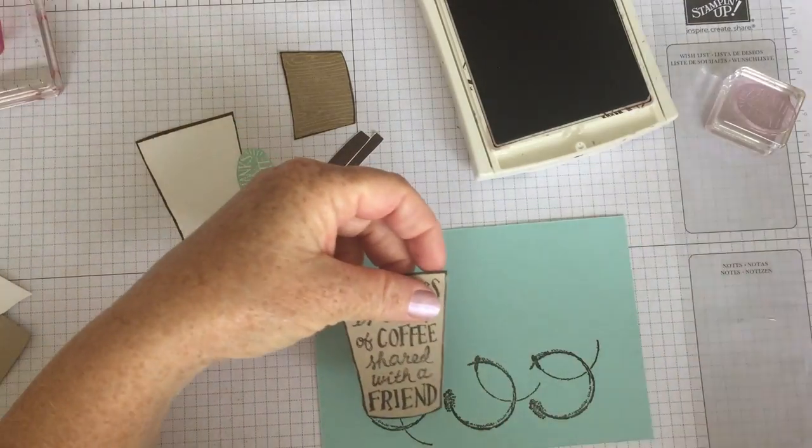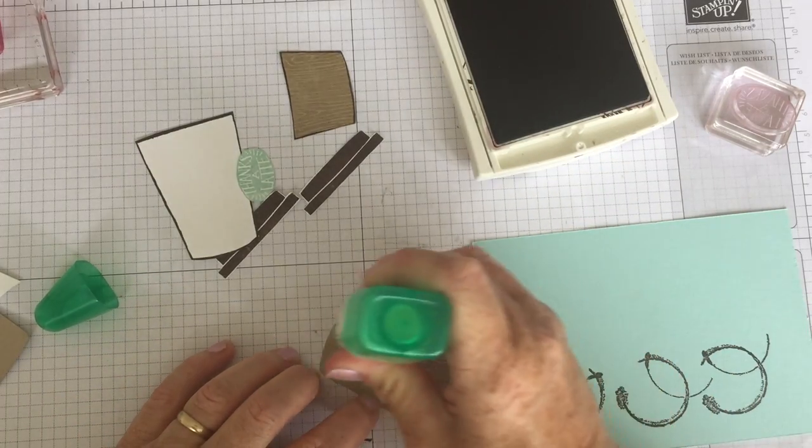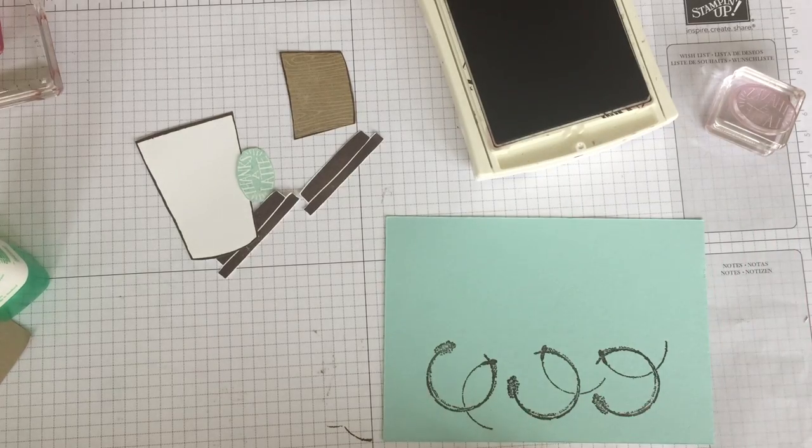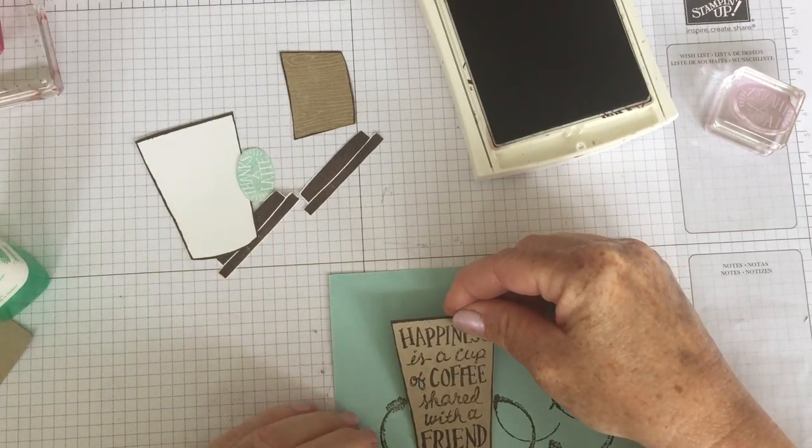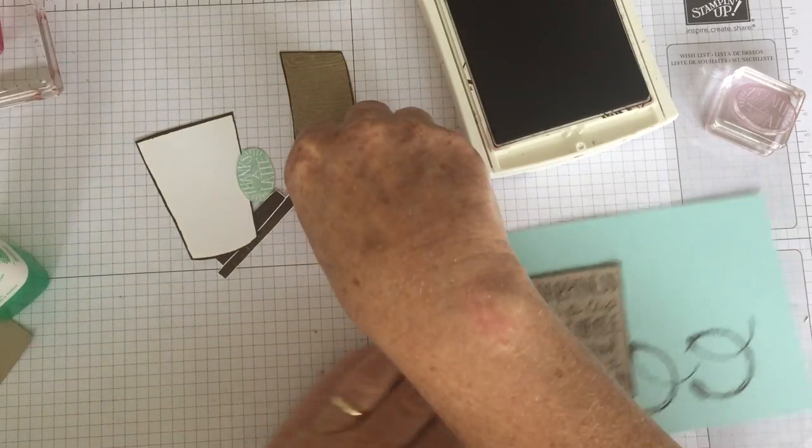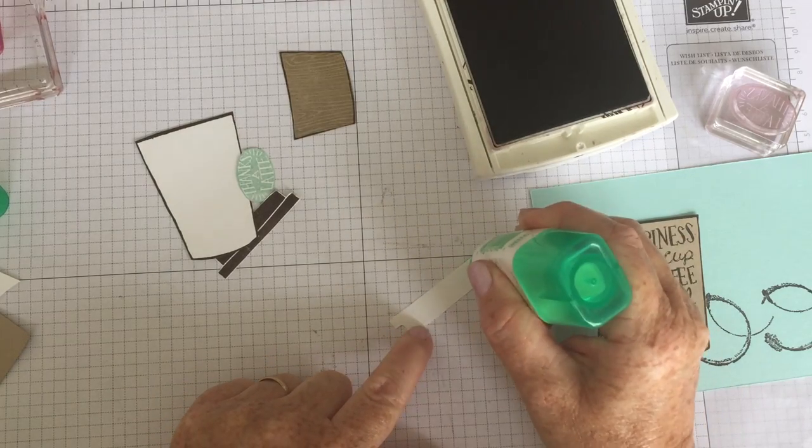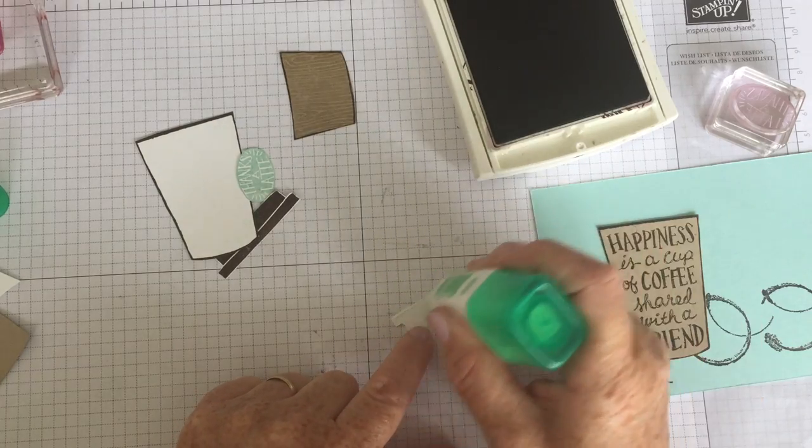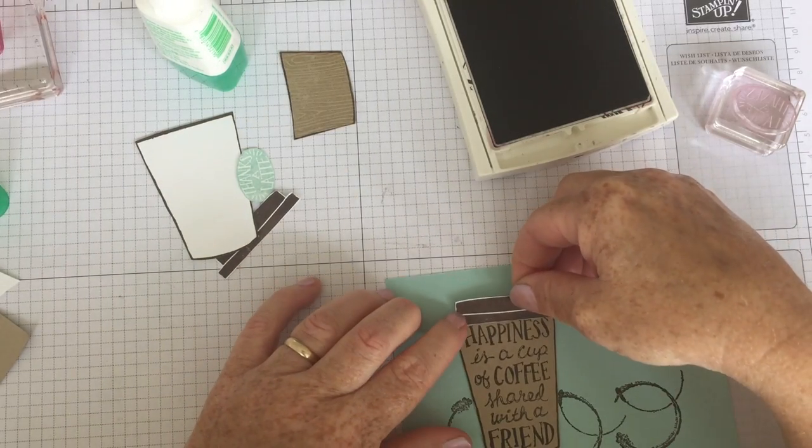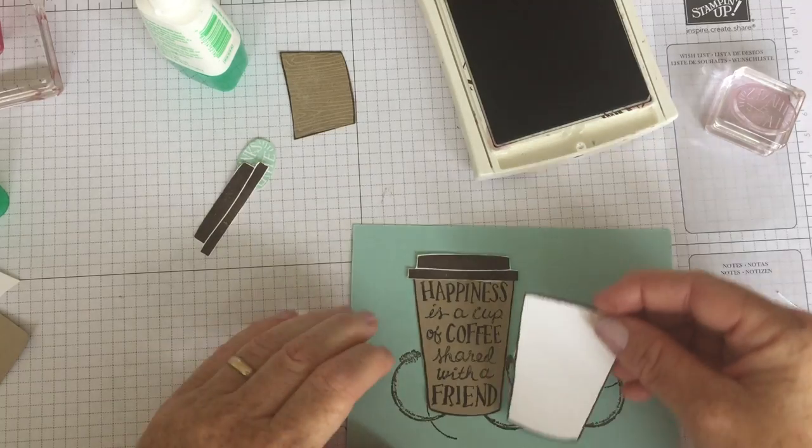Then I'm going to glue down my cup with some multipurpose Tombo. I love this glue; it's always my go-to glue. You don't need very much—it does the job. I'm just going to pop it on here like that. I'm going to put my lid on. On my lid, I'm just going to put a little bit of glue along the bottom edge just so it sticks to the actual cup. There we are, like so. So effective, isn't it? I love it.